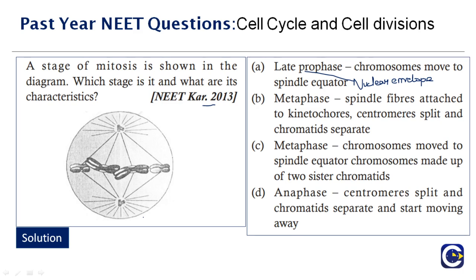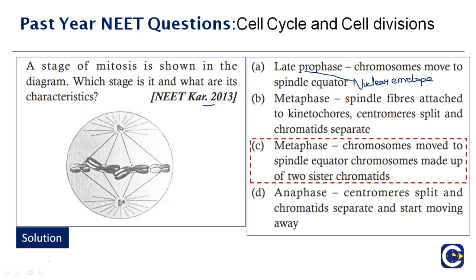Option B states metaphase with 'spindle fibers attached to kinetochores, centromere splits, chromatids separate' — also wrong. Metaphase is the stage where chromosomes are at their most condensed and coiled state. The correct answer is option C: metaphase, where chromosomes move to the spindle equator and are made up of two sister chromatids.